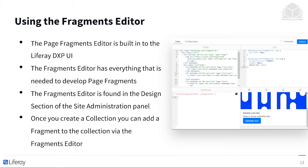Once you create a collection, you can add a fragment to the collection via the fragments editor. As you can see on the right, fragments are made up of HTML, CSS, and JavaScript, represented by the left squares and upper right in our graphic. In the bottom right, we have a real-time preview of what our fragment is looking like, and we can demo it in a few different views.